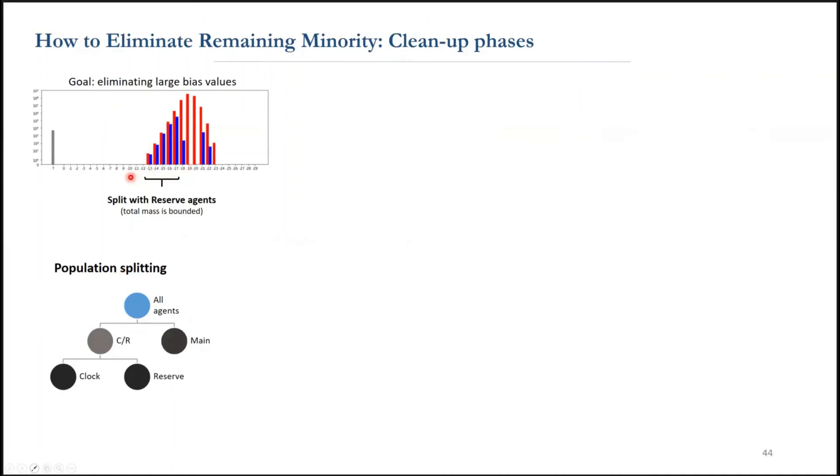Once they're gone, we move on to the next phase to remove the minorities with medium bias value. At this point, all the minority agents are at these three levels or below them. So we allow the cancel reactions to happen again.